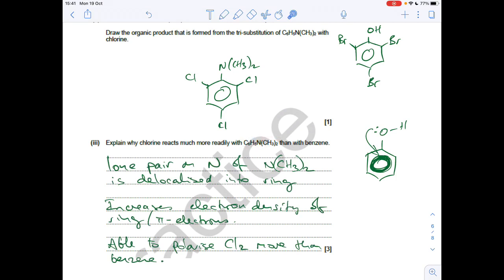So for the case of this molecule here. They've got an N. There's obviously a lone pair on that nitrogen. So the lone pair on the nitrogen of the N(CH3)2 group. Delocalises into the ring. Just like the lone pair on the O of the OH group in phenol. That's going to increase the electron density of the ring. Or the pi electrons. And therefore it's able to polarise chlorine more than benzene can.